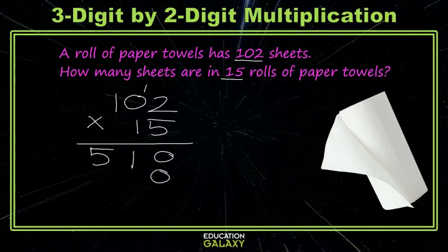0 to hold our tens place. 2 times 1 is 2. 0 times 1 is 0. 1 times 1 is 1.